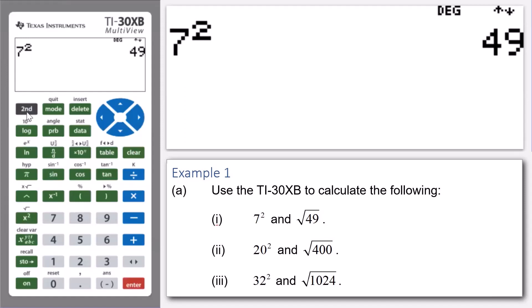Now, we're going to press 2nd X squared and that pastes the square root sign onto the calculator screen. Then we press 2nd and the negative sign key, and that pastes the previous answer onto our calculator screen, and then press enter. That shows that the square root of 49 is equal to 7, so we're back to where we started from.